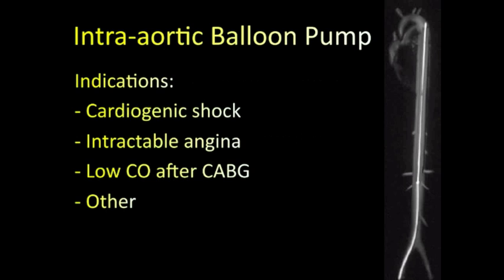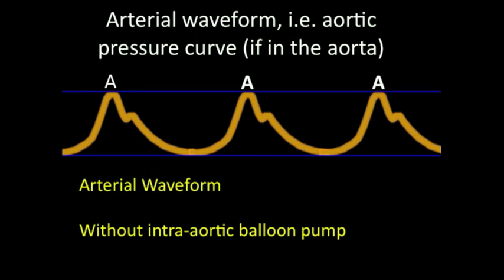Balloon pumps have several indications for clinical use: cardiogenic shock, intractable angina, low cardiac output after CABG, and several others. Now let's turn to the arterial waveform — in this case it's known as the aortic pressure curve, because we have a transducer in the aorta where the balloon pump is.